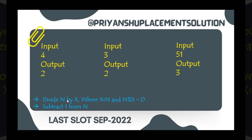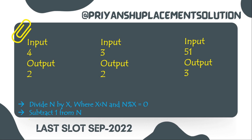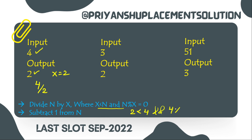Let's discuss the test cases. If input is 4, output is 2. We take X equal to 2: 4 divided by 2 gives N equal to 2, then 2 minus 1 gives 1. So we reduced 4 to 1 in two steps.